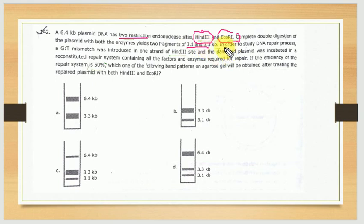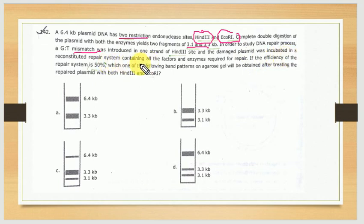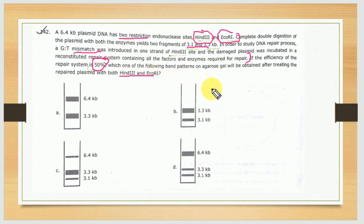In order to study the DNA repair process, a GT mismatch was introduced in one strand at the HIN3 site. The damaged plasmid was then incubated in a repair system containing all the factors and enzymes required for repair. The repair efficiency is 50 percent. After running agarose gel electrophoresis, we need to determine how many bands we will get and at what sizes.